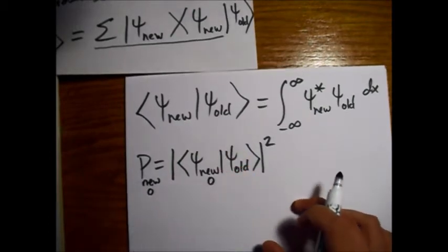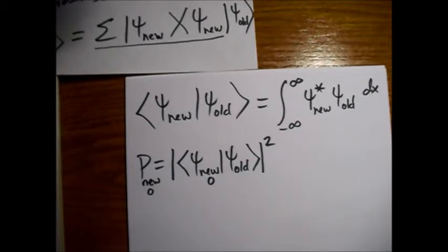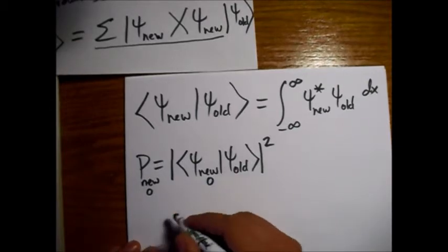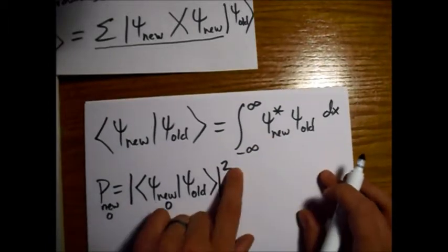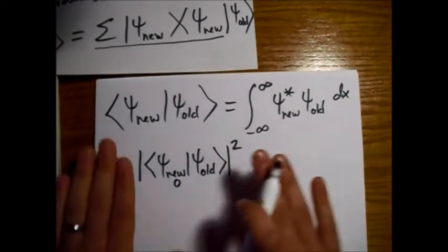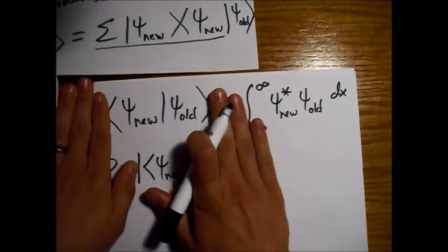So let me just write this out. So the probability of just one of the new's, the new vectors. So if we want to find the new ground state, I'm just going to write a zero below this, right? So we're just saying if we want to find the probability of the new ground state eigenfunction, we have to take the inner product of the new ground state eigenfunction with the old eigenfunction from our old square well, right?